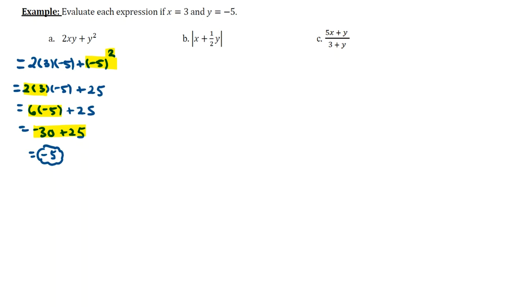Let's move on to part B. Here we have the absolute value of an expression, and that expression is x plus 1 half y. Alright, so this is going to be equal to the absolute value. Although not necessary, I'll use parentheses around the 3 when I change x to 3, plus 1 half. A little more necessary here, I'll put the negative 5 in parentheses, and then the rest of the absolute value symbols.